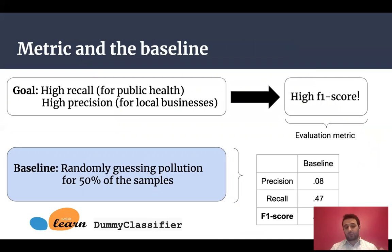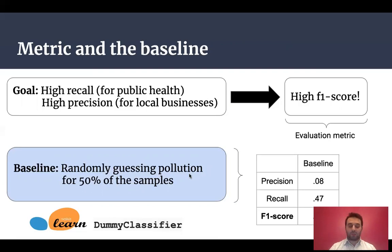For this project, I'm aiming at high recall and high precision. I'm especially aiming for high recall because for public health, I need to capture all polluted cases. On the other hand, I need high precision because low precision would mean too many false pollution alerts, which would affect local businesses. Therefore, I decided to use F1 score as my evaluation metric.